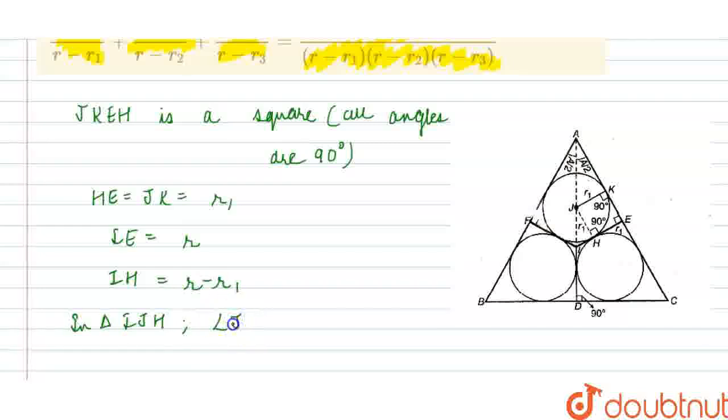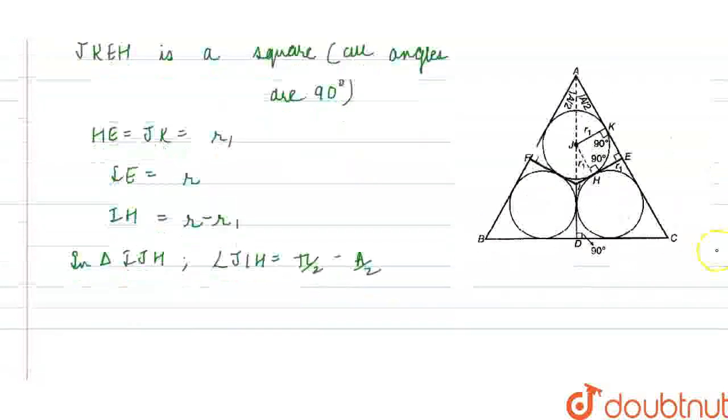in this right angle triangle IJH, angle JIH equals 90 degrees. Therefore, angle JIH would be equal to π/2 minus A/2. Because in triangle IJH, this angle is 90 degrees, this is A/2, so this must be π/2 minus A/2. I hope this explanation is clear.